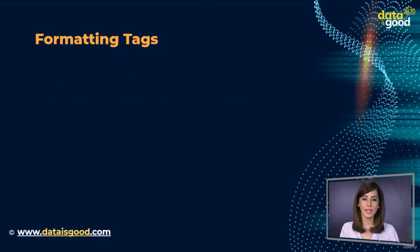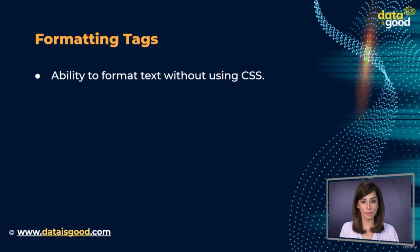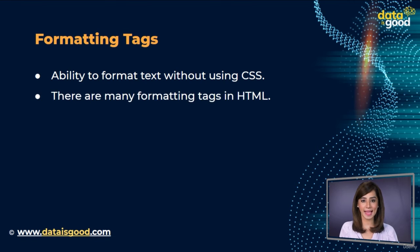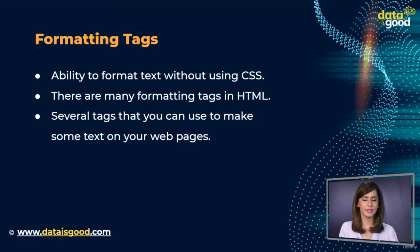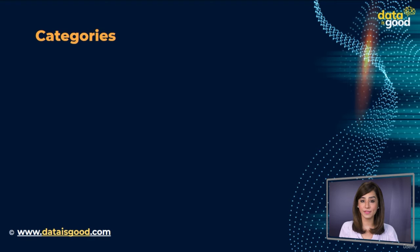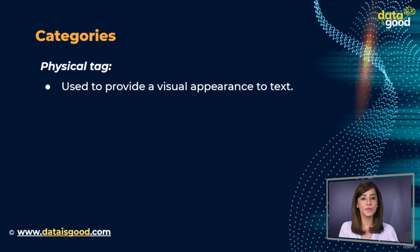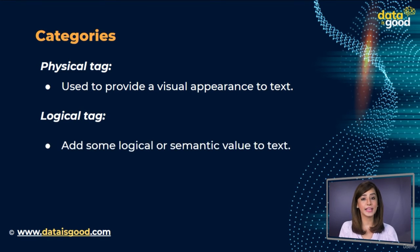HTML provides us the ability to format text without using CSS. There are many formatting tags in HTML, and HTML provides several tags that you can use to make some text on your web pages appear differently than normal text. HTML formatting tags are divided into two categories: physical tags, used to provide a visual appearance to the text, and logical tags, used to add some logical or semantic value to the text.